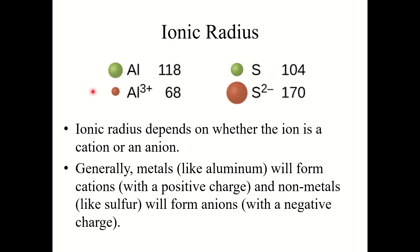Now let's talk about ionic radius. Ionic radius depends on whether the ion is a cation or an anion. Metals like aluminum form cations with a positive charge, and non-metals like sulfur form anions with a negative charge. Cations are always smaller than the neutral atom, whereas anions are always larger than the neutral atom. The aluminum cation is smaller than neutral aluminum; the sulfur anion is larger than neutral sulfur.